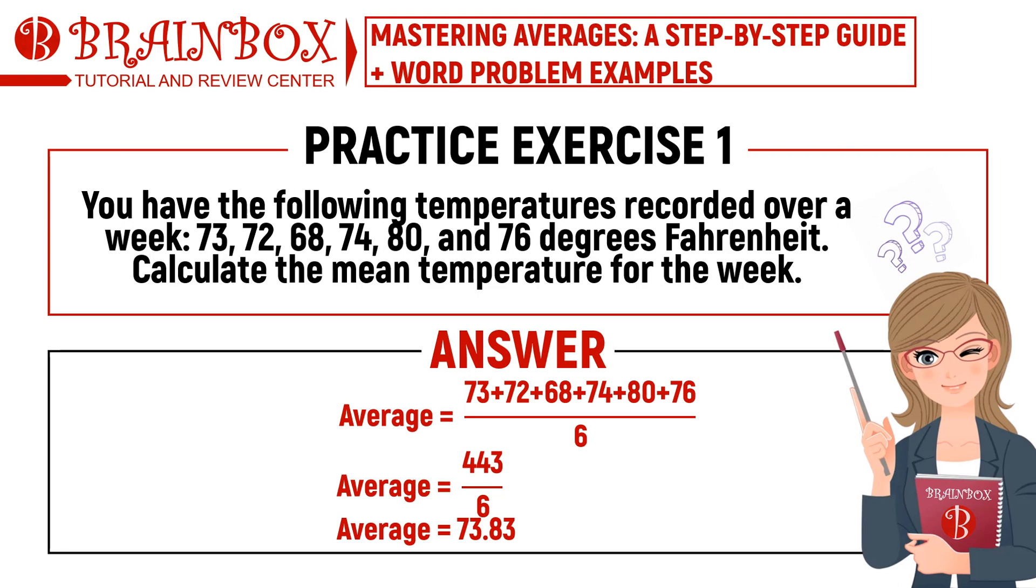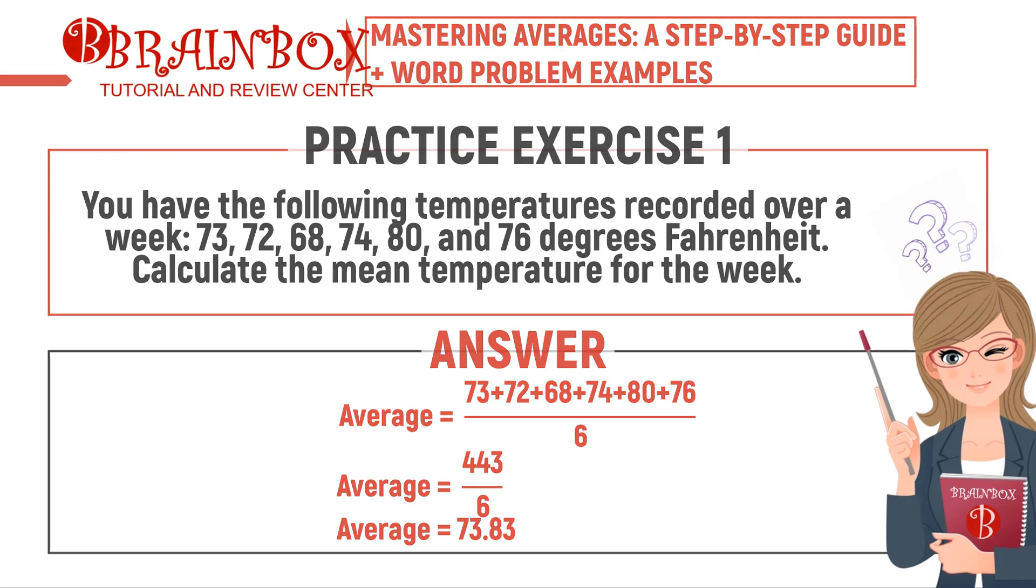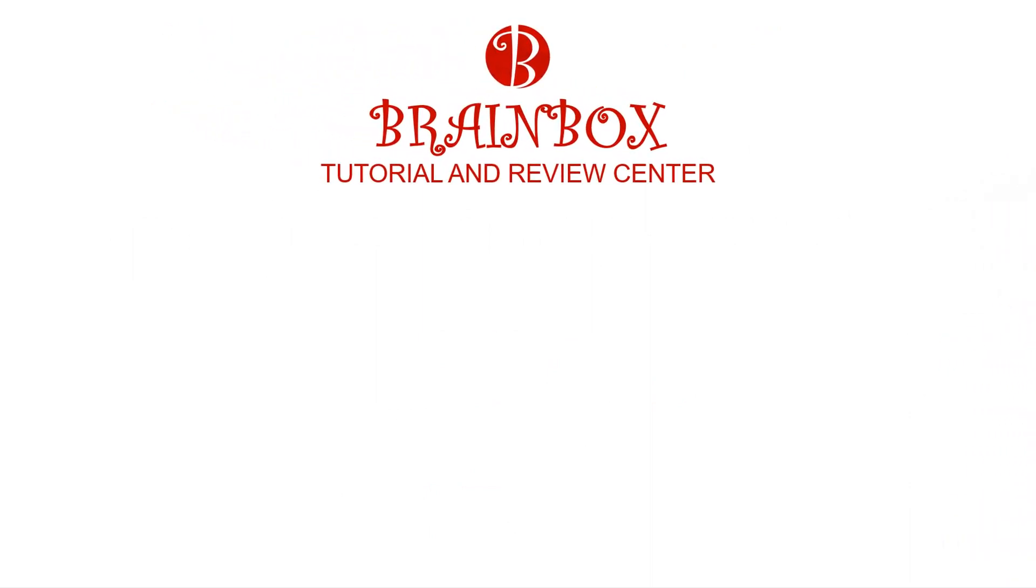In this case, adding all of the observed temperatures yields 443. Next we divide this amount by 6, generating an average temperature of 73.83 degrees Fahrenheit. And there you have it, a step-by-step guide to finding the mean average.